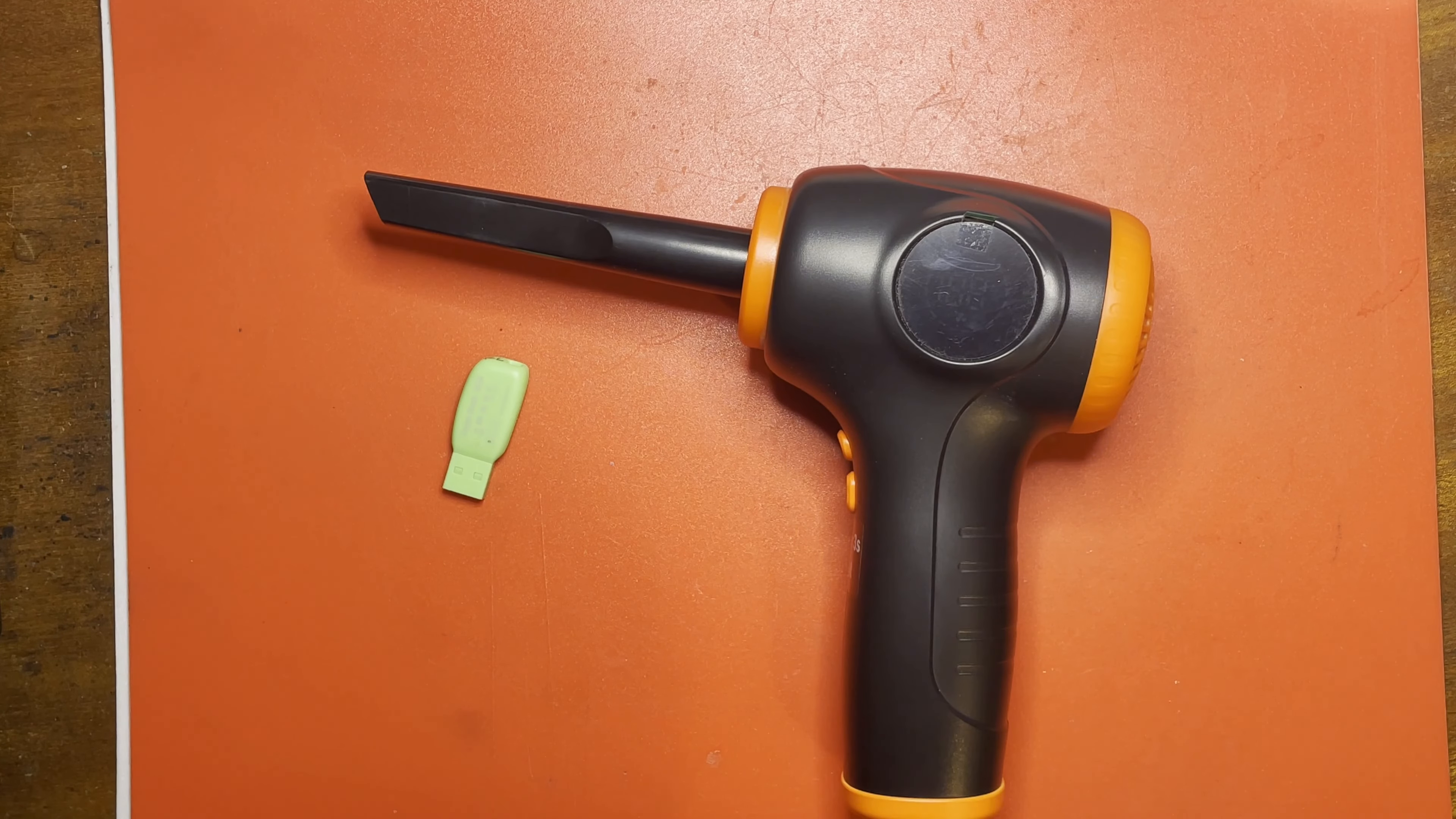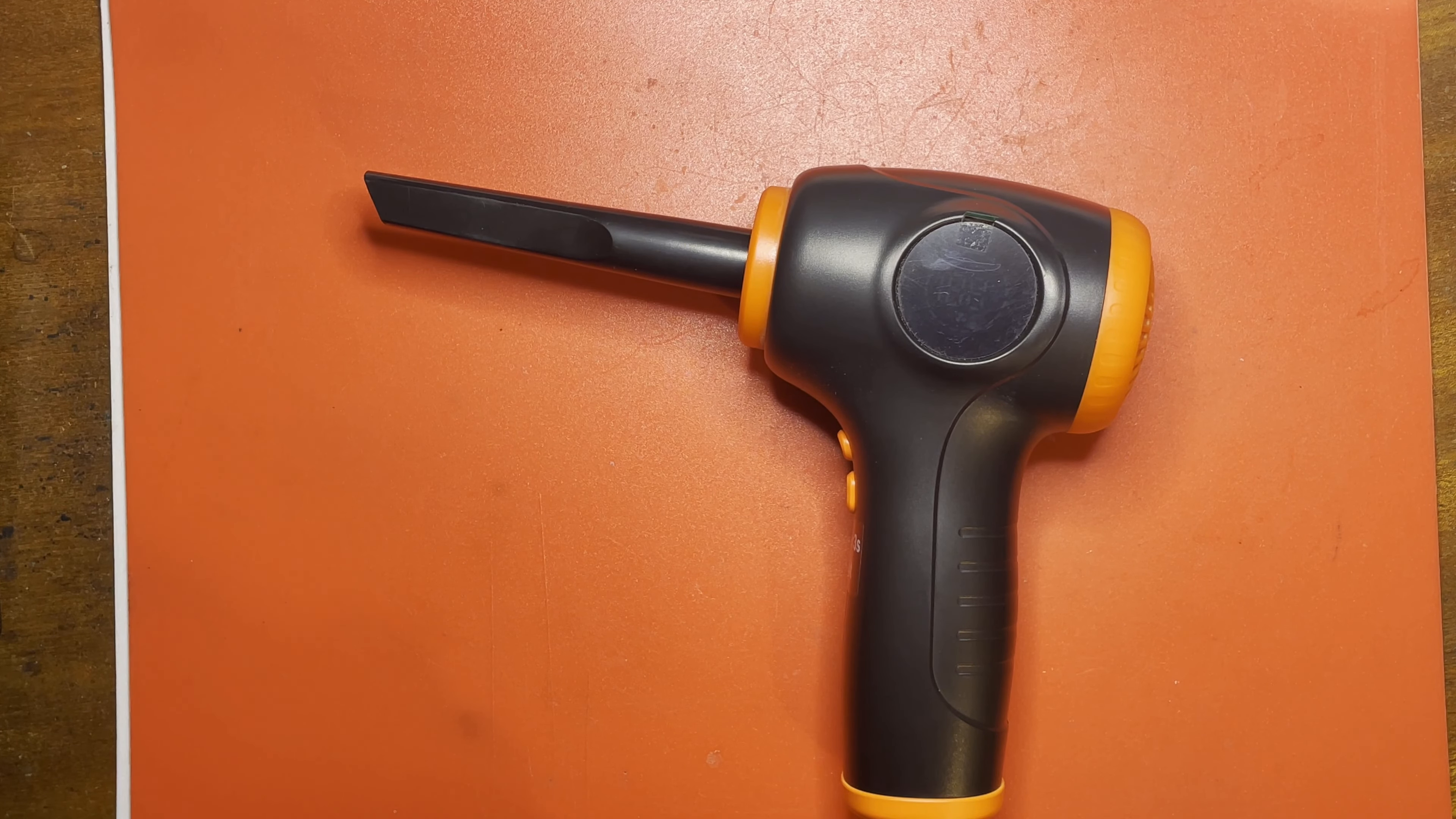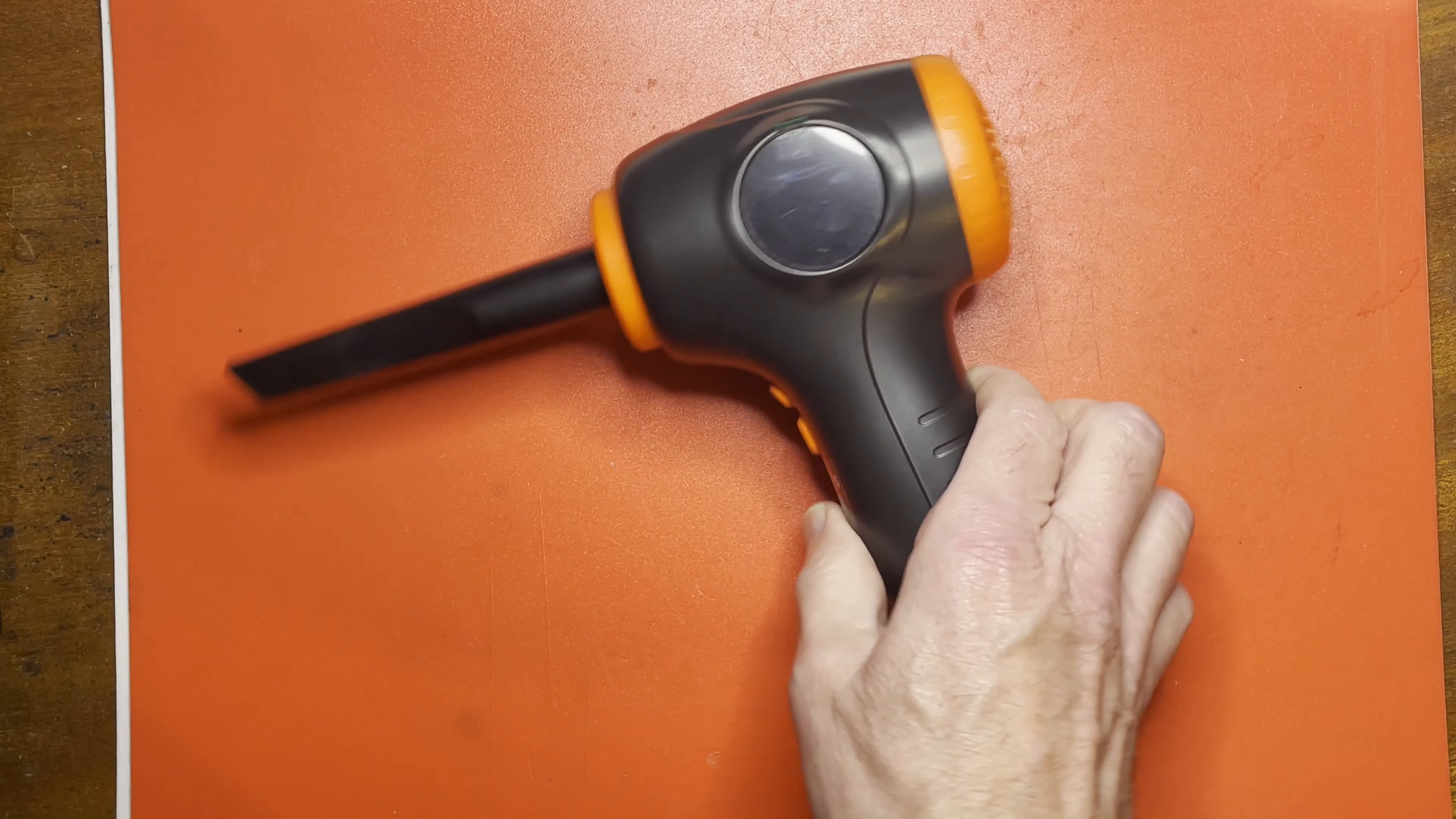Now, you'd want to have a vacuum cleaner at hand on the other side to try and catch some of the stuff it blows out if you're removing something messy. But yeah, I don't know what the life expectancy is, but it certainly works very well.